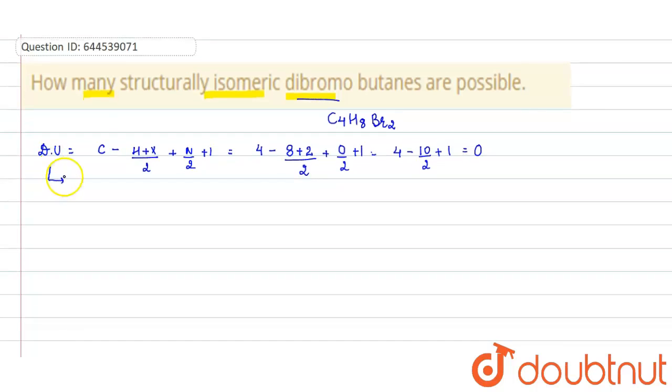signifies that it does not contain any ring or multiple bonds. All single bonds will be present. Okay, now let's start making the isomers.